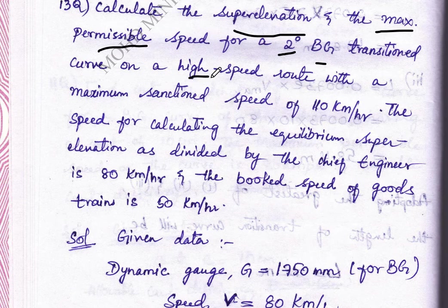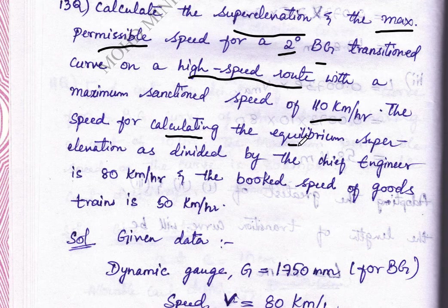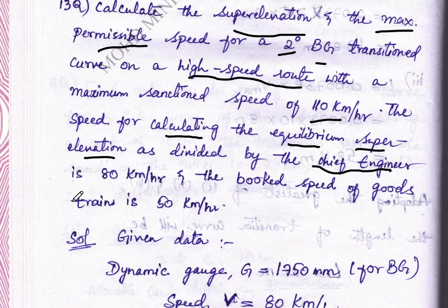So next, the speed for calculating the equilibrium superelevation as divided by the chief engineer is 80 km per hour. And the booked speed of goods train is 60 km per hour.